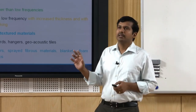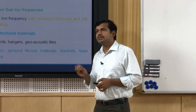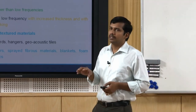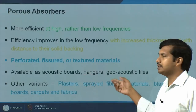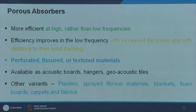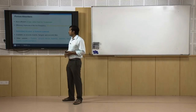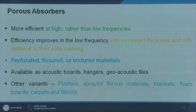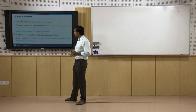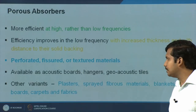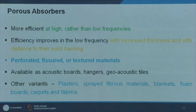There are different types available: perforated boards, fissured boards, textured materials with different patterns and textures. They are also available in the form of acoustic boards, hangers, geo-acoustic tiles, and many architecturally attractive panels suited to different interior themes. Other variants include acoustic plasters, sprayed fibrous materials, blankets, foam boards, carpets, and fabrics. This is one of the most predominantly used acoustic absorber types in architectural applications.